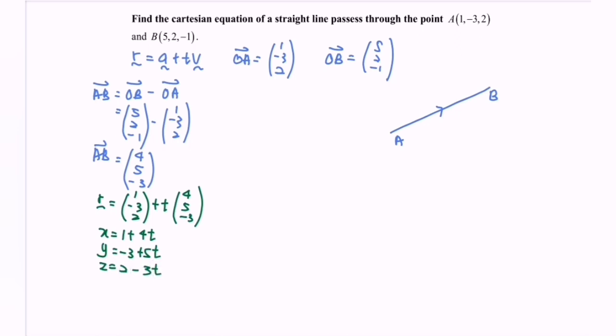Express T as a subject. So X minus 1 over 4 equals to Y minus 3 over 5 equals to Z minus 2 over negative 3. So that is the Cartesian equation for the line.